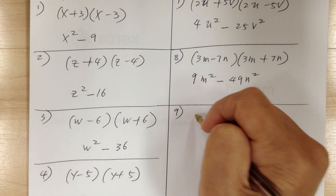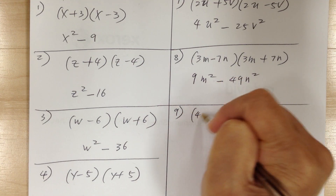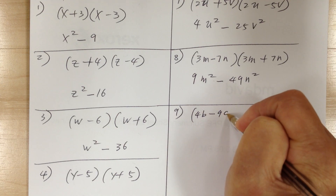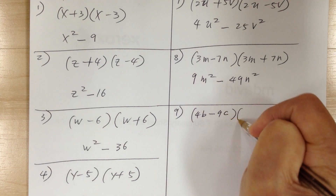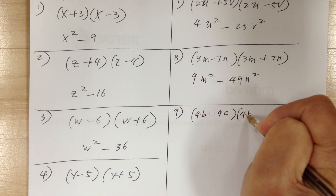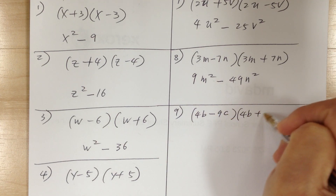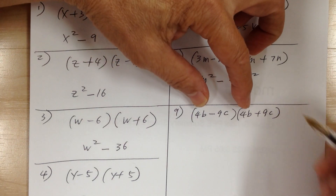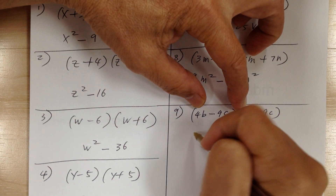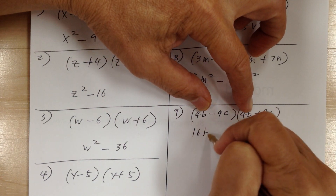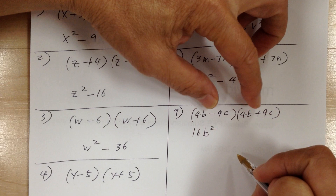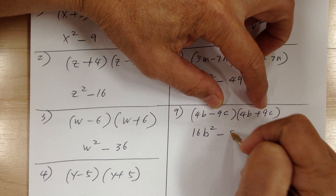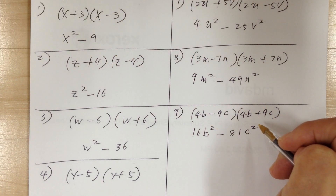Number 9: you have 4b minus 9c times its conjugate. Multiply, so you have 16b squared minus 81c squared.